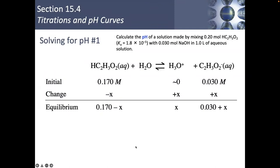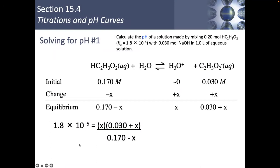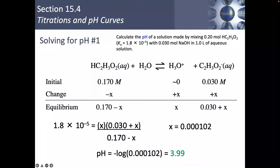Setting up the Ka expression: it's products divided by reactants, and water isn't involved. Solving the quadratic equation — I'm not going to go over how to use it here; chapter 14 covered that — x ends up being 0.000102. The pH is just the negative logarithm of x because x is the hydronium concentration, giving pH = 3.99.